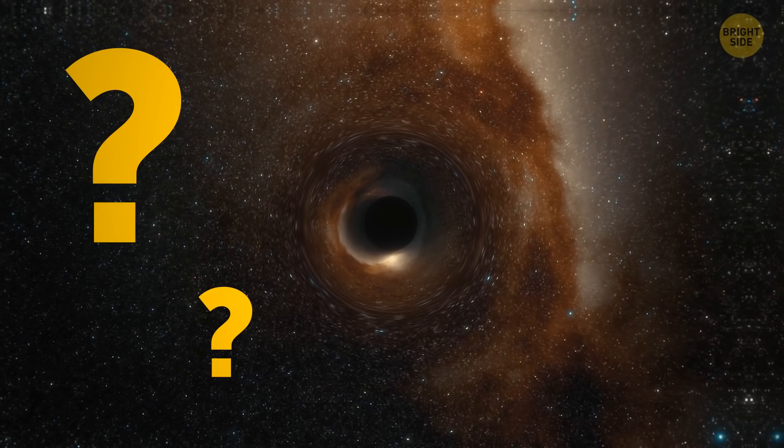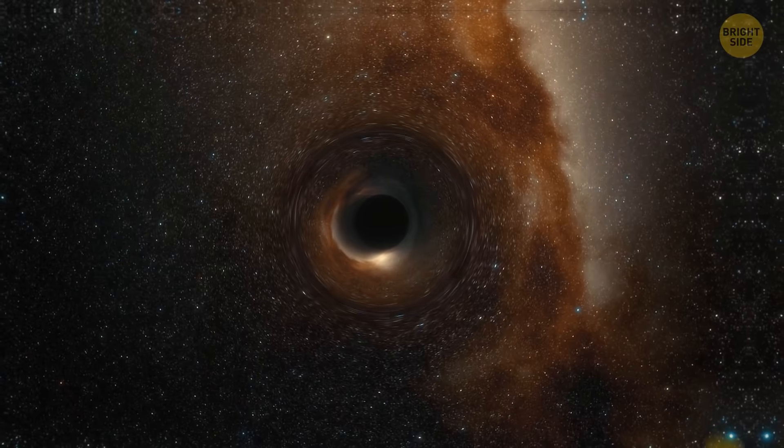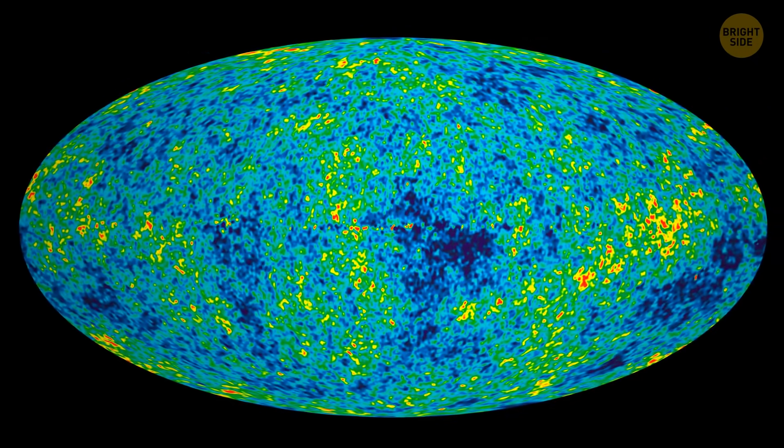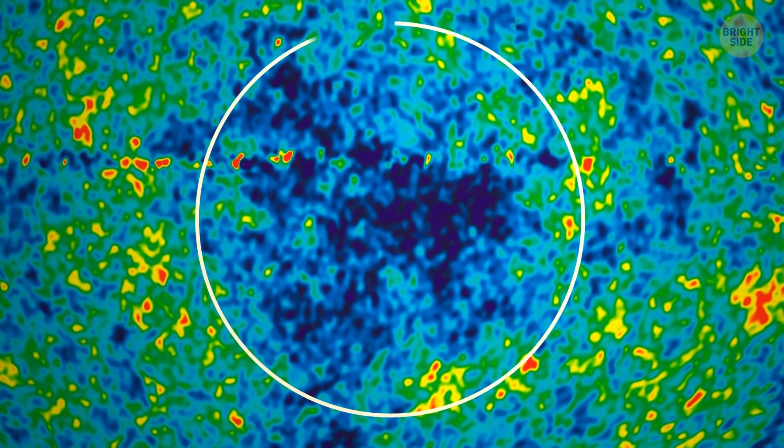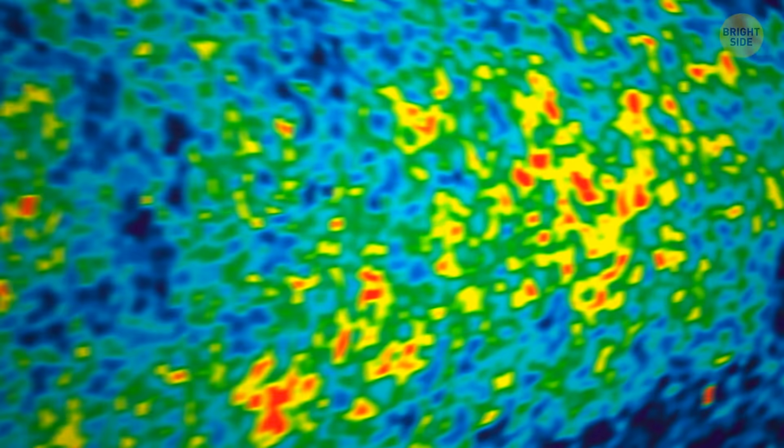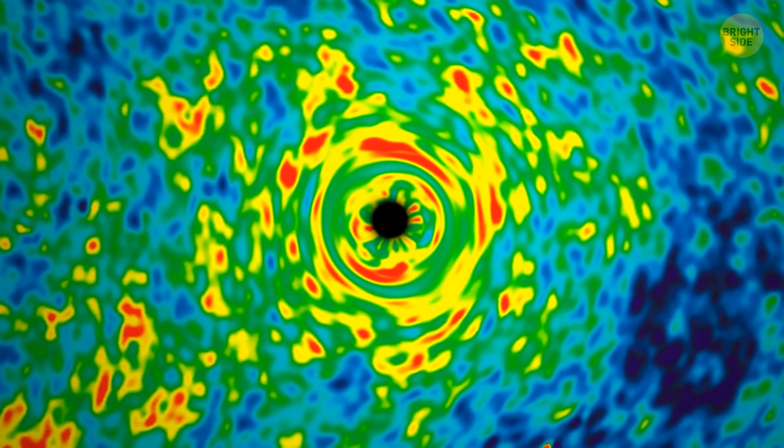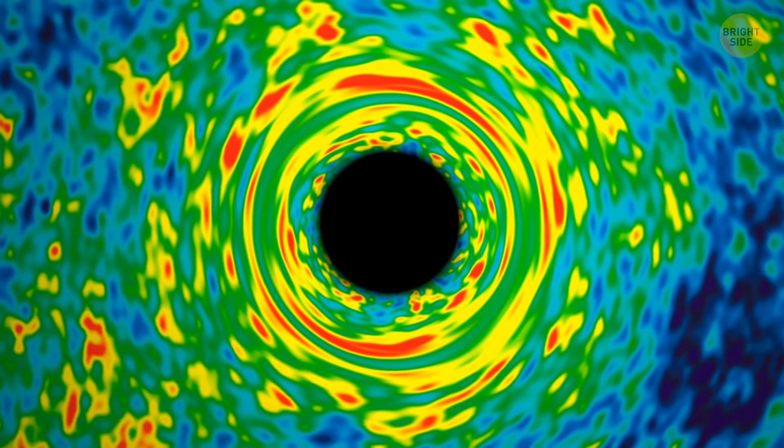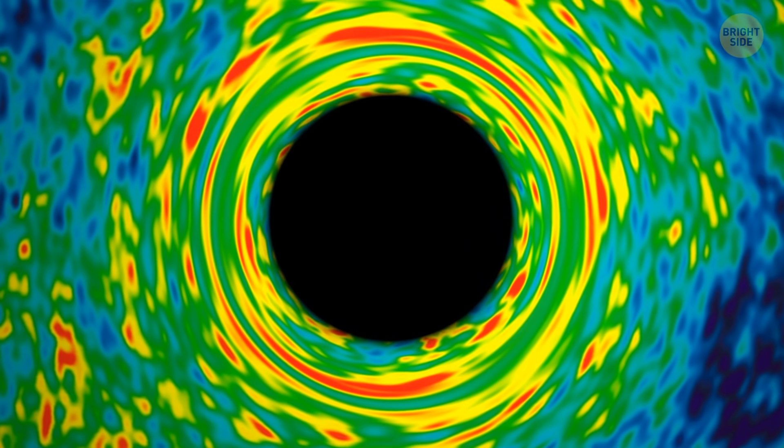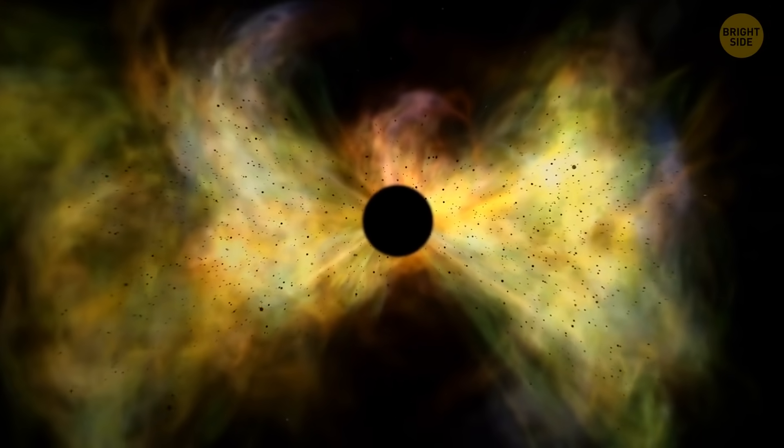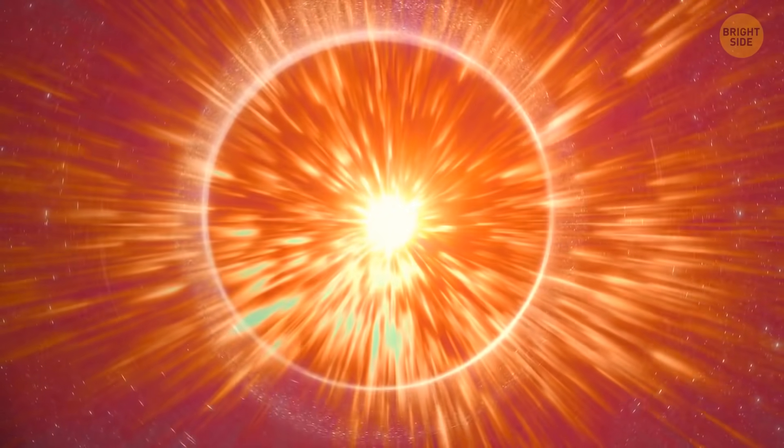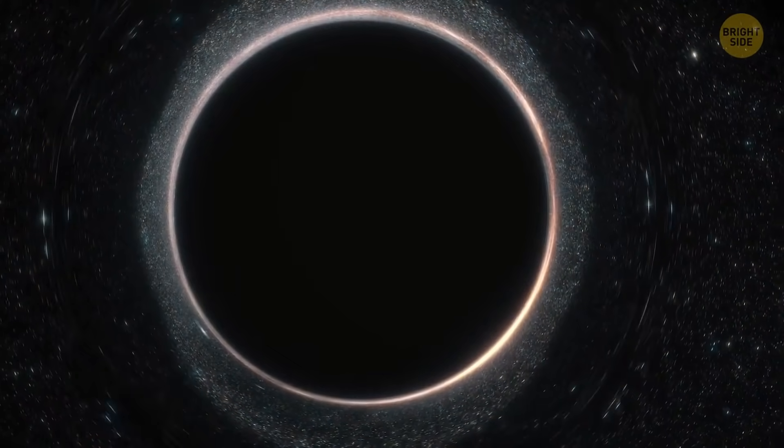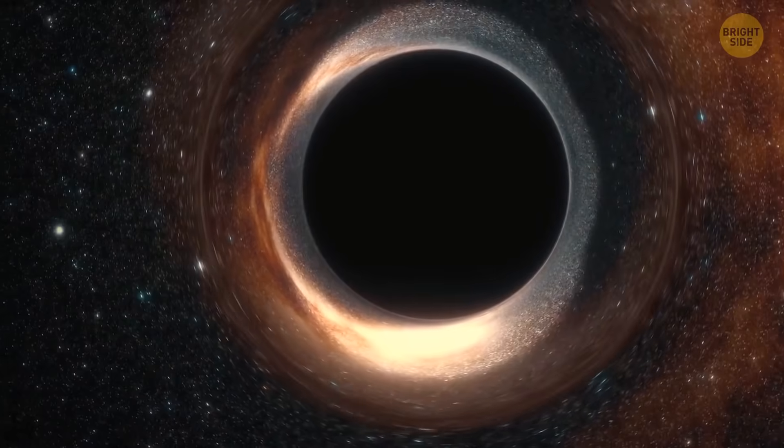But how did primordial black holes appear in the first place? In the very beginning, space wasn't the same. In some regions, it was hotter. In others, cooler. And some areas were extremely dense. Scientists believe these dense spots could collapse into primordial black holes. The most curious thing, though? These holes might be so small exactly because they popped up right after the Big Bang. The longer it took a black hole to appear, the larger it was.